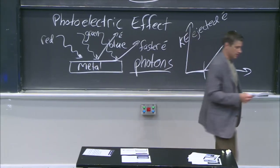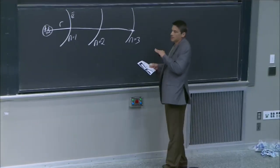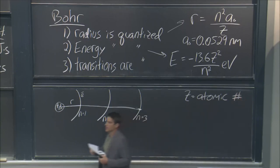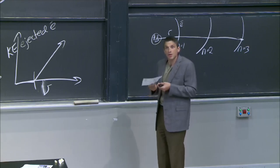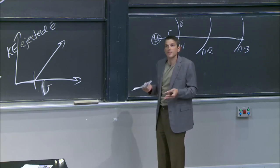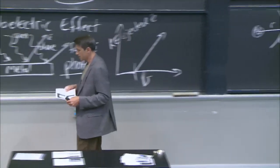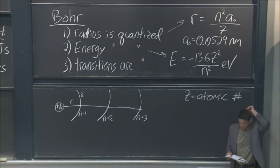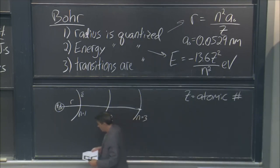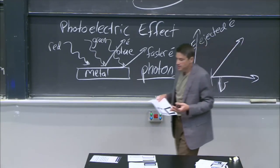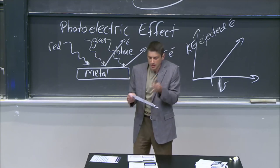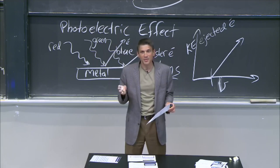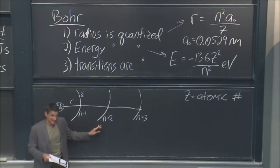Z is the atomic number, and it comes in because it tells us how many positive charges there are — how many protons in the nucleus — and it comes in when you do F = ma, that's how it enters the Bohr equations. r is a distance, n is the quantum number, a₀ is the constant, and Z is the atomic number in both cases. This is mind-blowing because it tells you that electrons in the atom orbit are only at those specific distances. Quantization means nothing else. That electron can't be anywhere else — it must be this distance or that distance.